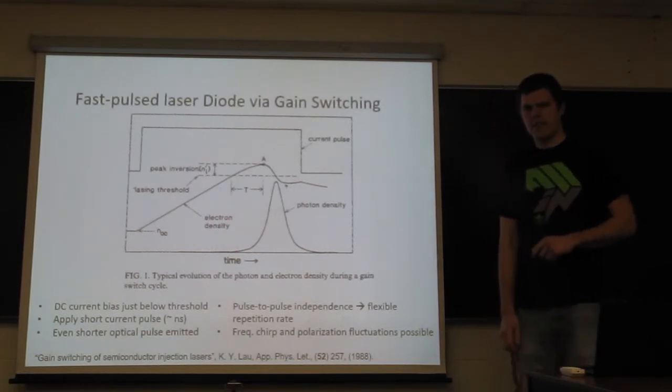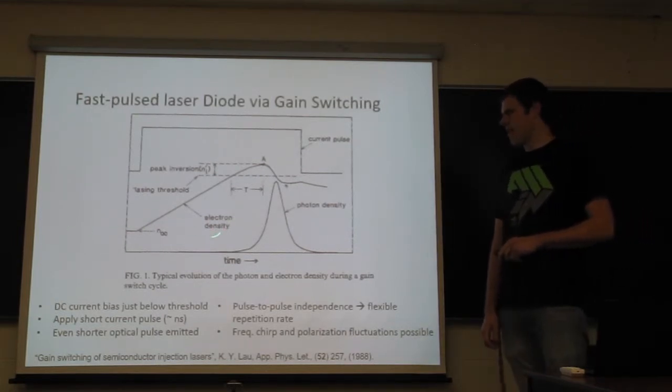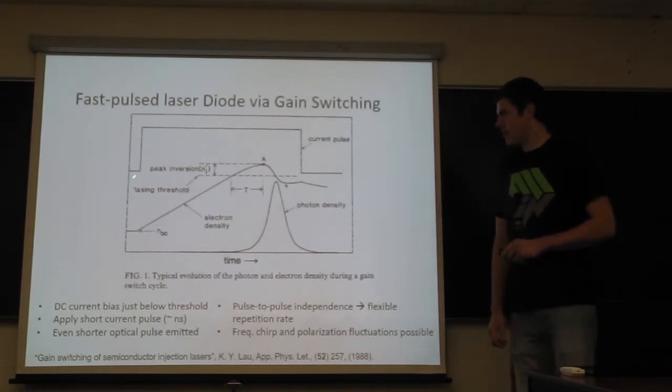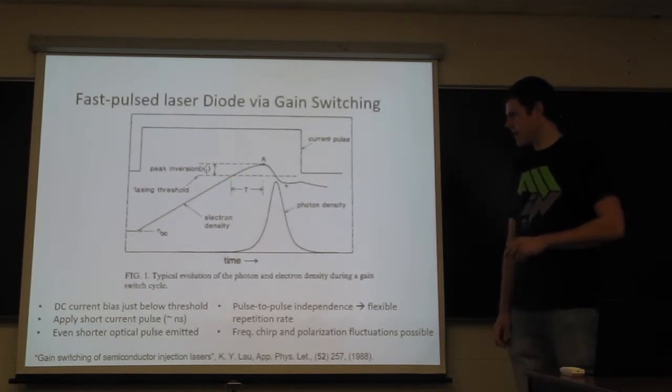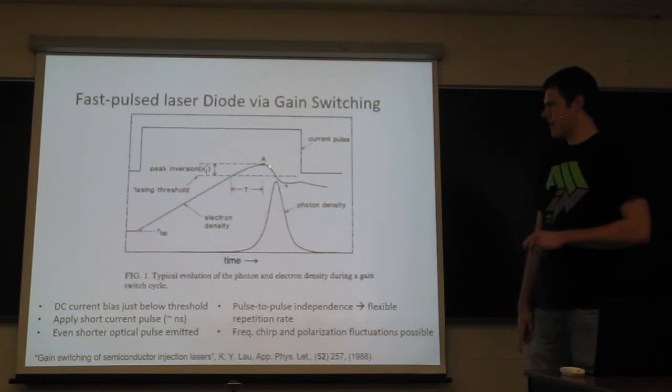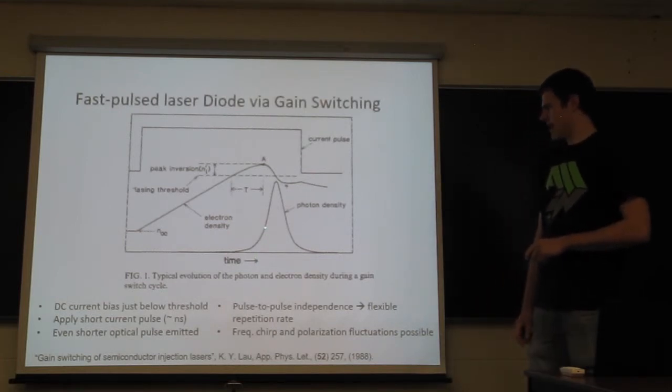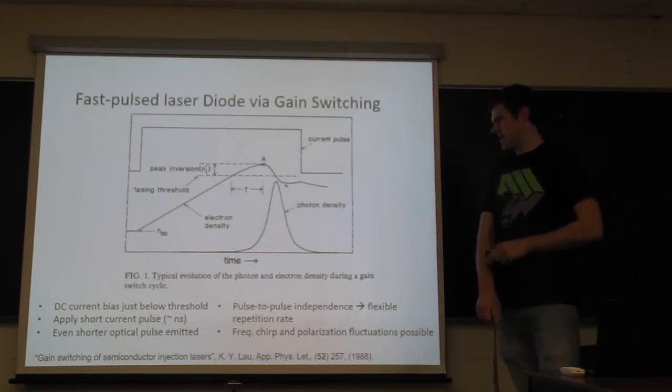So gain-switching is this phenomena where if you have a bias current going through the diode, where you have some carriers, and it's below the lasing threshold, then if you apply a short current pulse, this will raise the current density, and it will raise it above the threshold. And then, as population inversion happens, and you get lasing, you will get a short optical pulse, at which time the current shuts off, and so it will not continue.